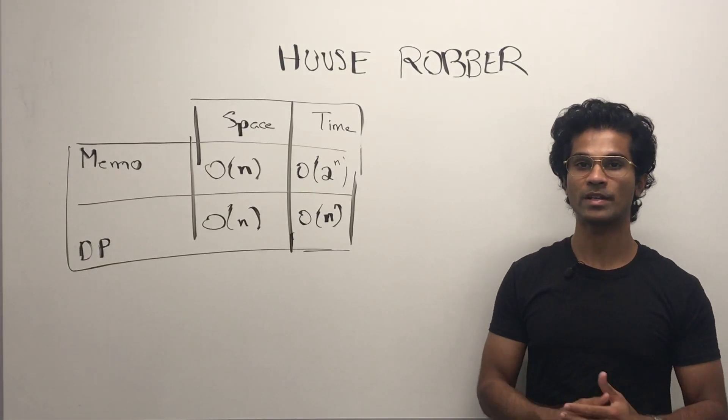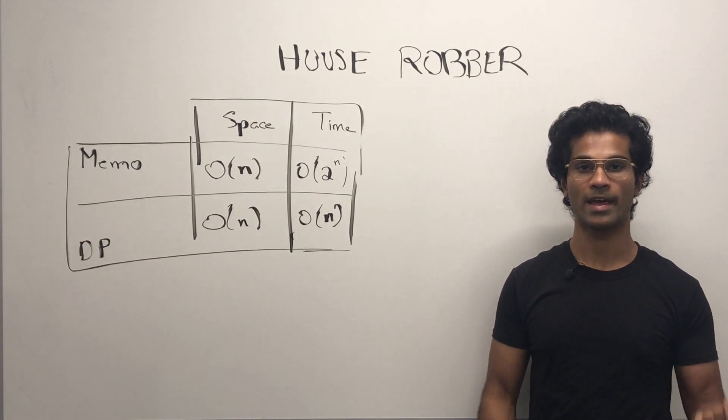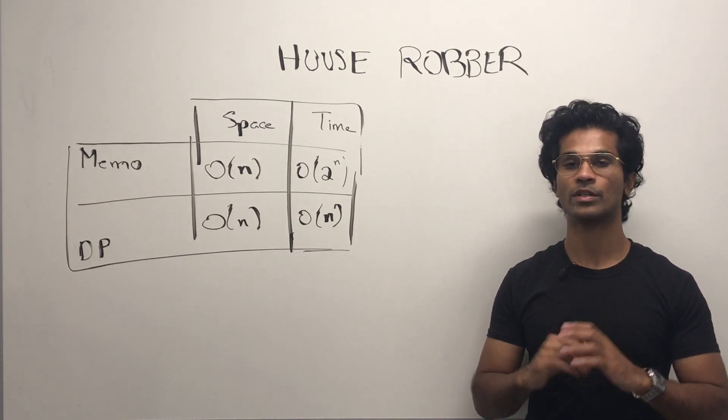The bottom-up tabular approach, the space and time complexity are going to be O of n, because we initialized an array of length n, and we iterated through the original array once.